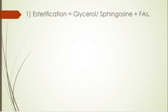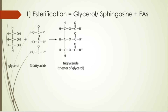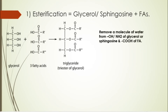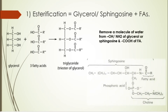The first reaction to form a triacylglycerol (TAG) is esterification — glycerol or sphingosine as the backbone with the fatty acids. One glycerol molecule with three fatty acids gives you a triacylglycerol. The bond is an ester bond, and you carry out esterification by removing three molecules of water, joining the oxygen of the glycerol with the carbonyl group of the fatty acids.